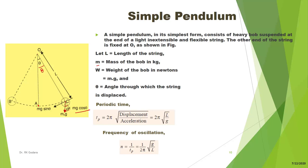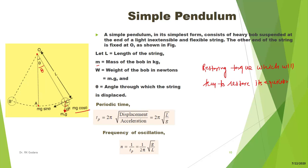If we want to find out the restoring torque — the torque that will try to restore its original position — that would be mg sin theta multiplied by the length of the string L. So the restoring torque is T = mg sin theta × L.